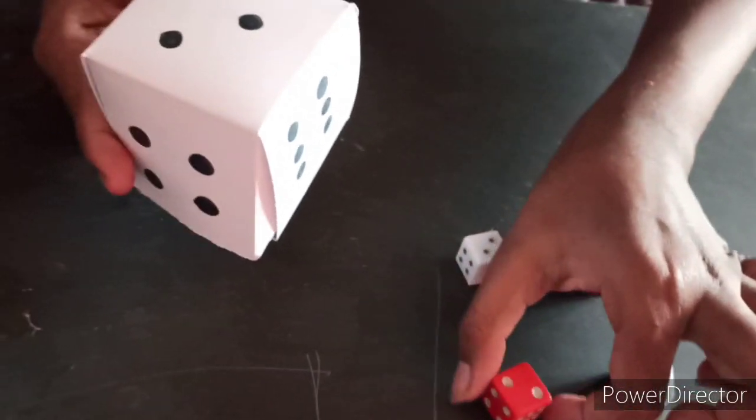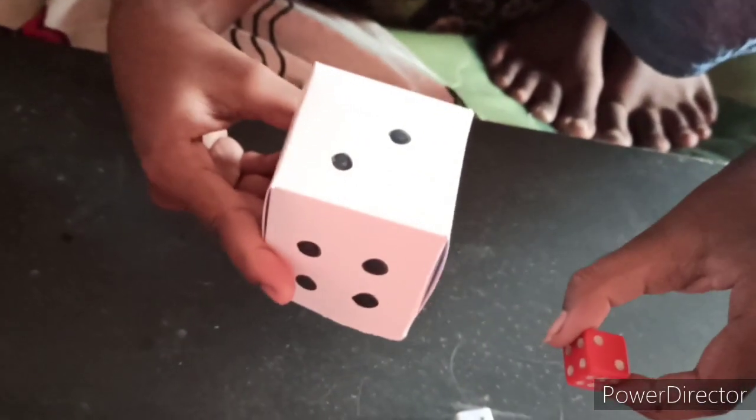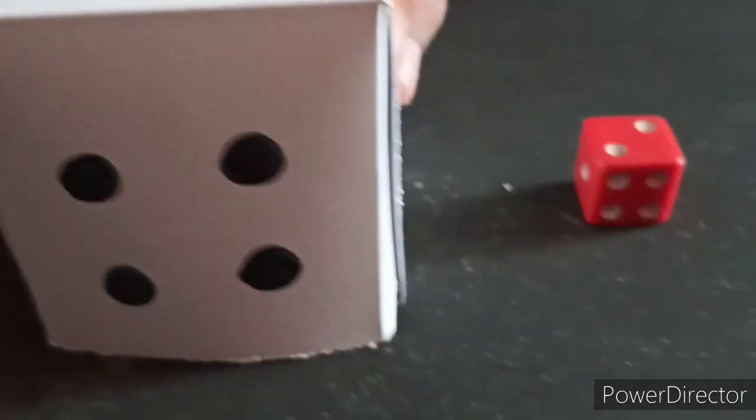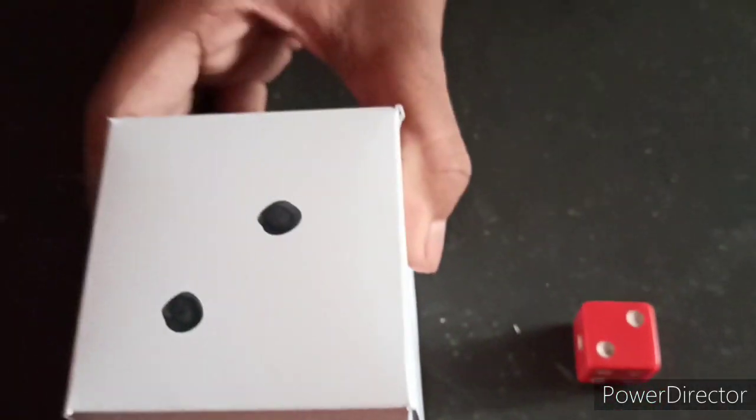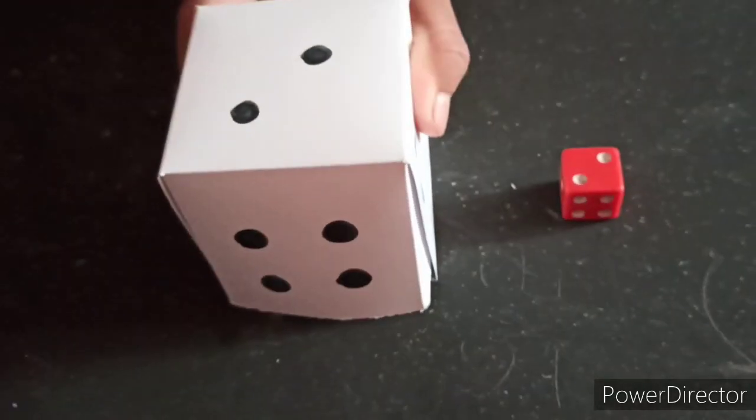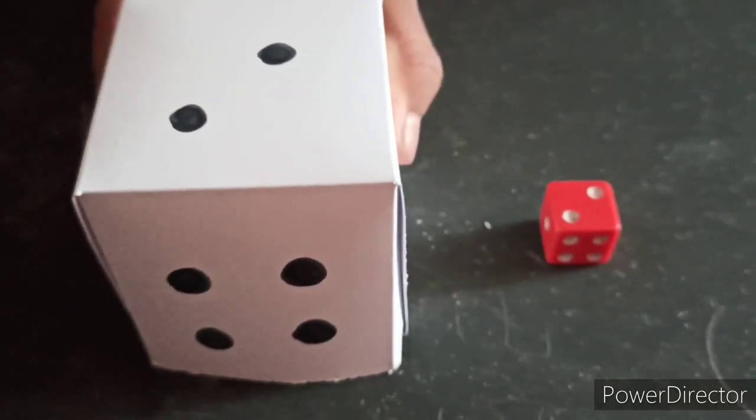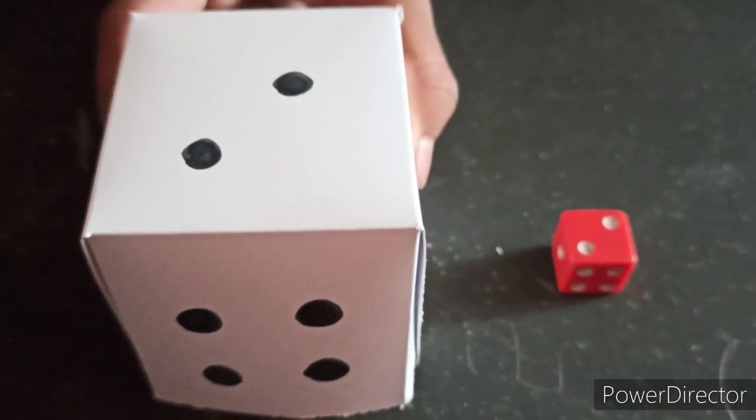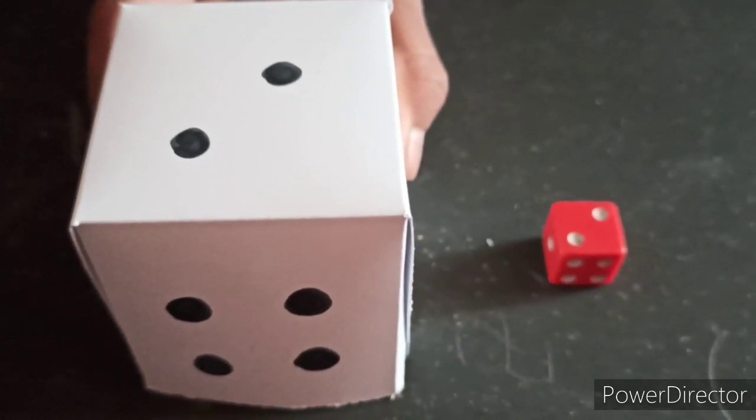The red dice has the same numbers as in cut out. Now see here. This is 4 and here also 4. And here it is 2, 2. And 6 and 6. So this dice is correct. You also try to make a cut out and do this problem.